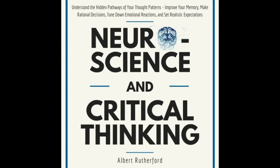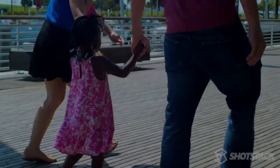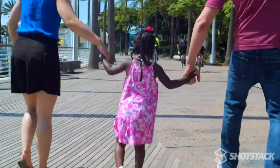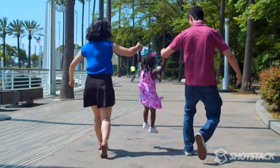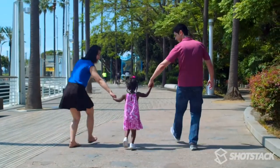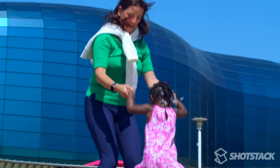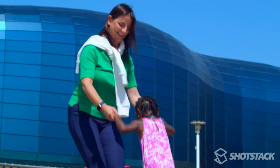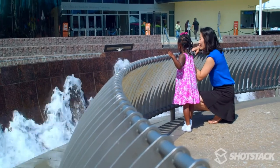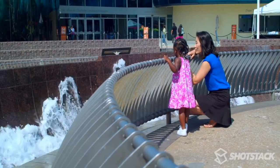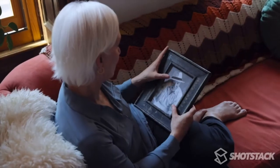Think of your earliest memory. Is it of you running around at the playground, going to an amusement park, or meeting your sibling? Chances are this memory was actually completely invented by your brain. We don't have a video recorder attached to our eyes. Our brain is responsible for constructing our memories, and therefore our memories are not necessarily a reflection of reality. Instead, they're influenced by our pre-existing beliefs and biases.